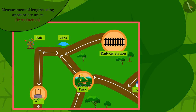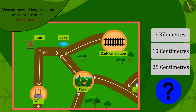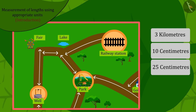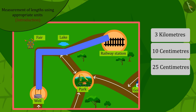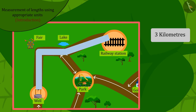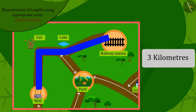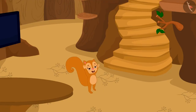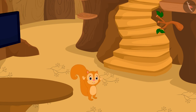If Chanda had written the distance between the railway station and the well on a paper, which of the following could it be? You can pause the video to find the answer. Well done! Because the distance from the railway station to the well is very long, we cannot measure it in centimeters. Therefore, the distance will be three kilometers.